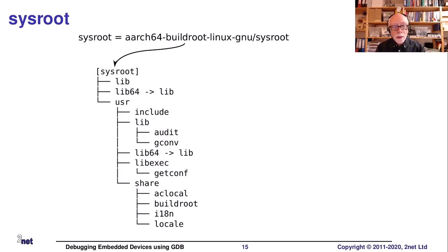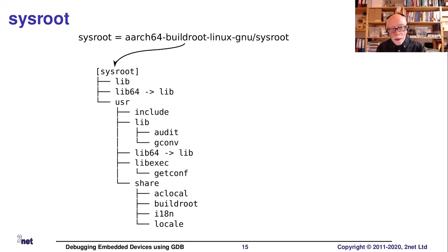Within the sysroot you'll find libraries in lib and usr/lib. If this is a 64-bit architecture, lib64 may be there, usually as a symbolic link back to lib. The include directory is at sysroot/usr/include, where all header files should be. From the debugging point of view, the header files don't really matter, but we really need to know where these libraries are — in sysroot/lib and sysroot/usr/lib.